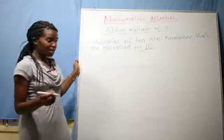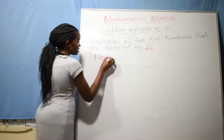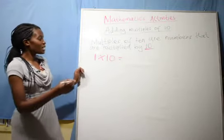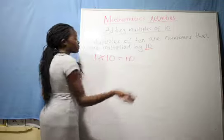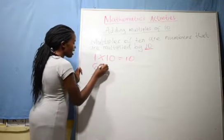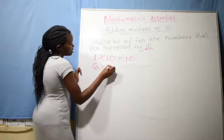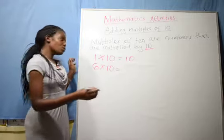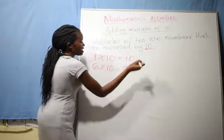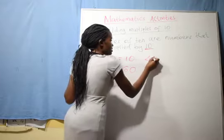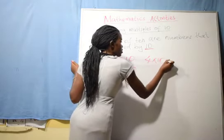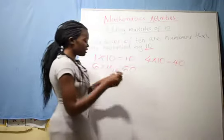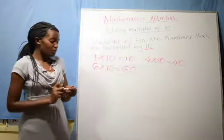For example, we have a number like 1 times 10. 1 times 10, what do we get? Yes, good, we get 10. Another multiple of 10, 6 times 10. When you take 6 times 10, what do we get? 60. Good, we get 60. Another one is 4 times 10. These are examples of multiples of 10.